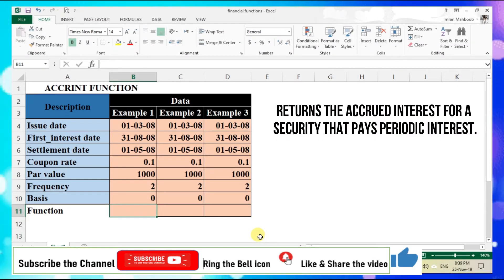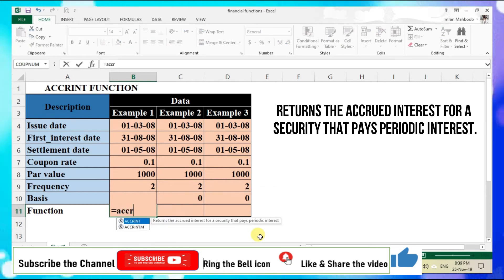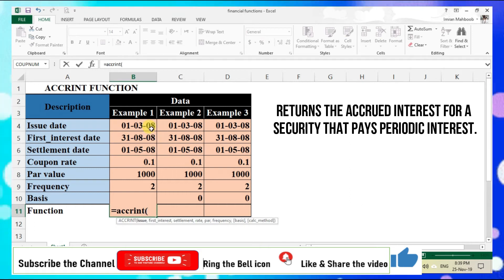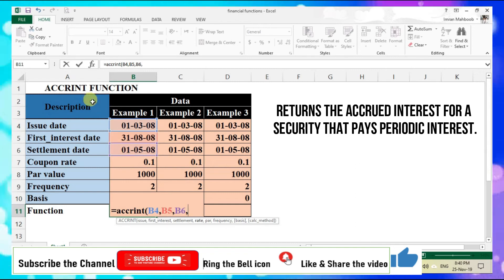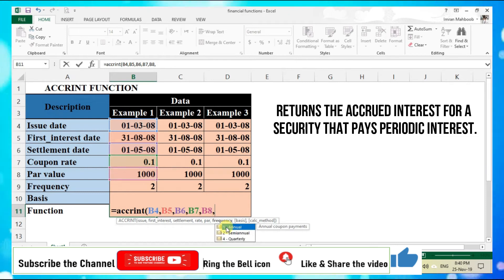In example one, equals ACCRINT, open parenthesis, issue date comma, first interest date comma, settlement date.